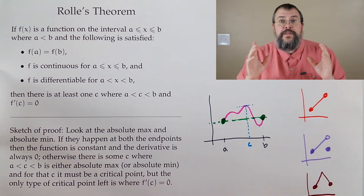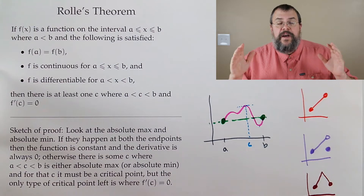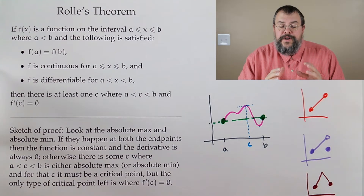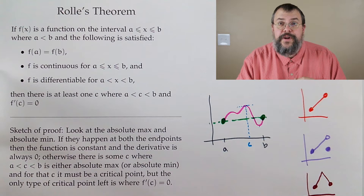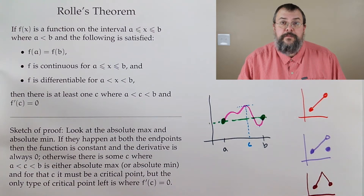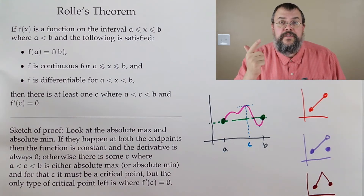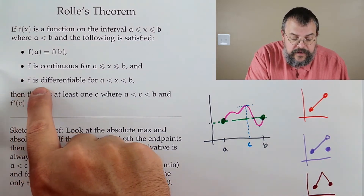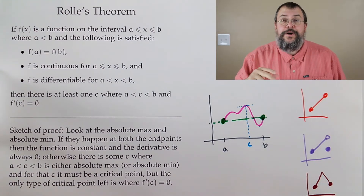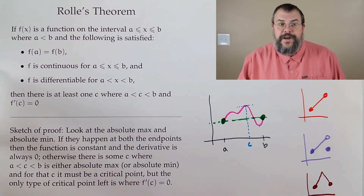Now suppose the absolute max occurs somewhere other than the endpoints. An absolute max has to occur at a critical point. What kinds of critical points do we have? Endpoints — but we said it's not an endpoint. The derivative is undefined — but our assumption that f is differentiable says it must be defined. So the only option left is that the derivative equals zero, which is exactly what we wanted to show. And now we're done — that's Rolle's Theorem.